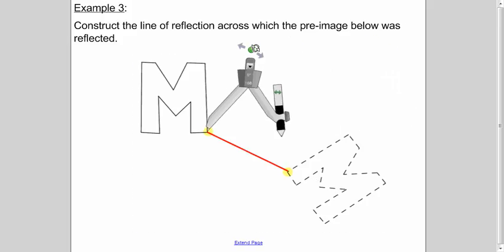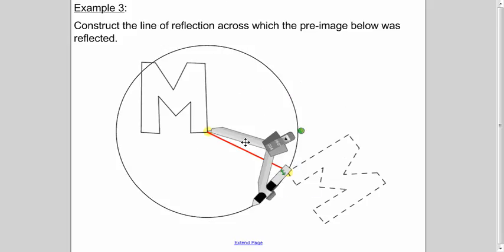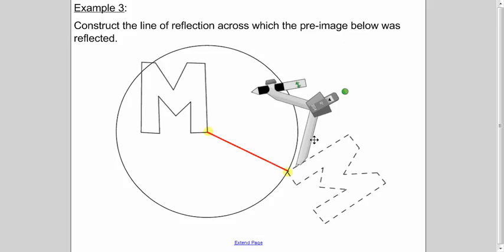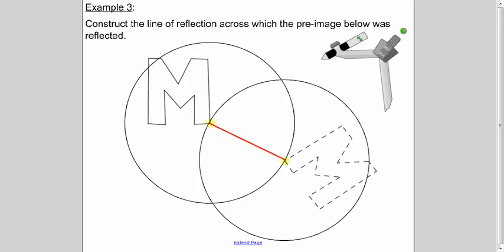Put it on one endpoint, open it up, draw your circle. As long as it's more than half, it'll work out. And flip it around, put it on the other endpoint. Here in blue, we have the line of reflection.